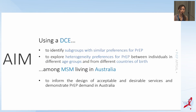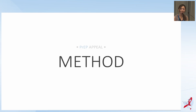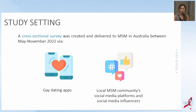In this study, we used a DCE to identify subgroups with similar preferences for PrEP and to explore heterogeneity of preferences between individuals in different age groups and from different countries of birth among men who have sex with men in Australia. The results can inform the design of acceptable and desirable services and demonstrate PrEP demand in Australia. The survey was launched between May to November 2022 via gay dating apps such as Grindr, and also distributed through local MSM community social media platforms.